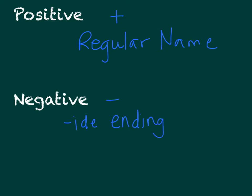So we follow these same rules when we're naming compounds. For example, if we have LiCl, we know that Li is the positive ion and Cl is the negative ion.